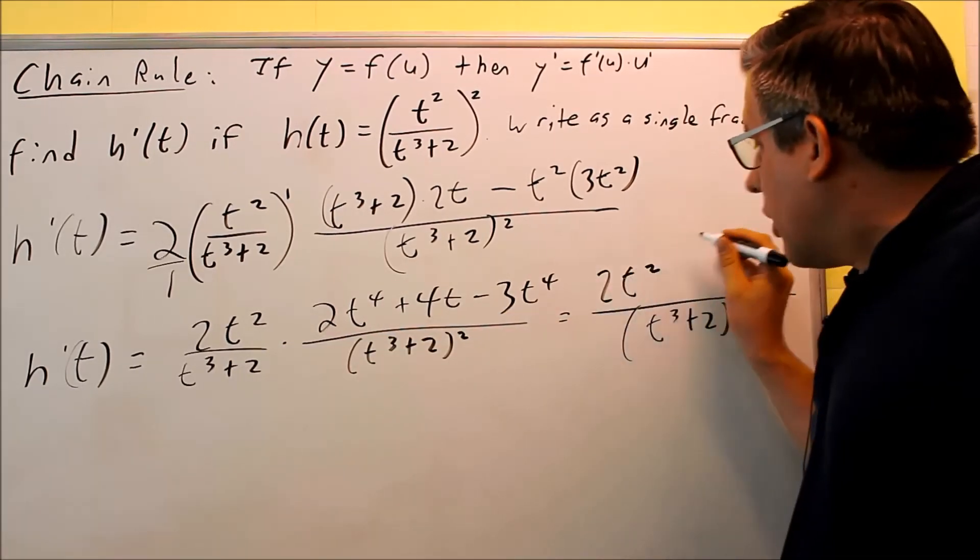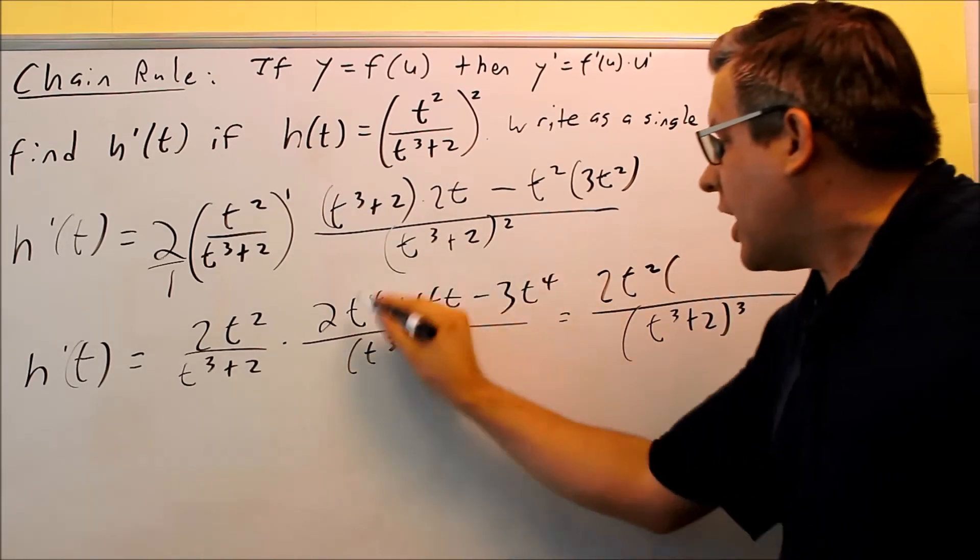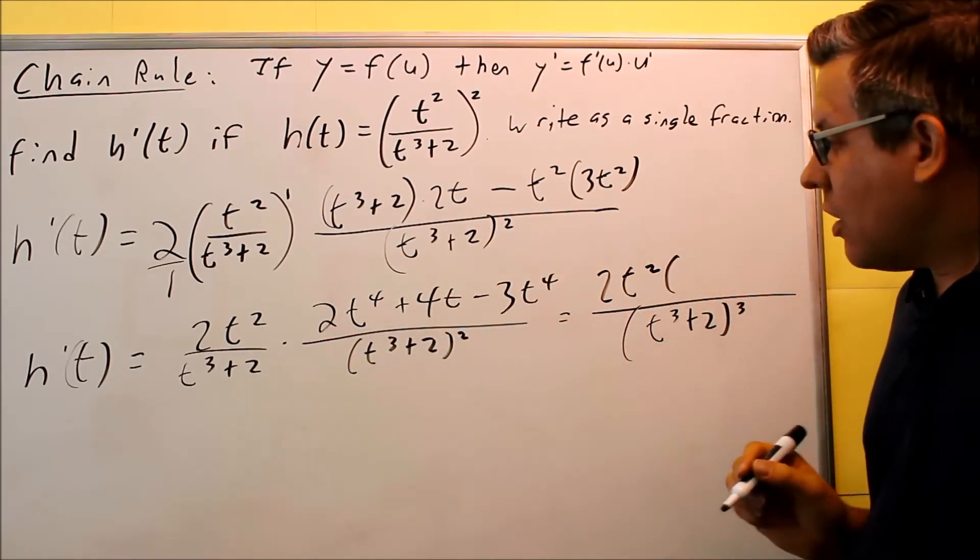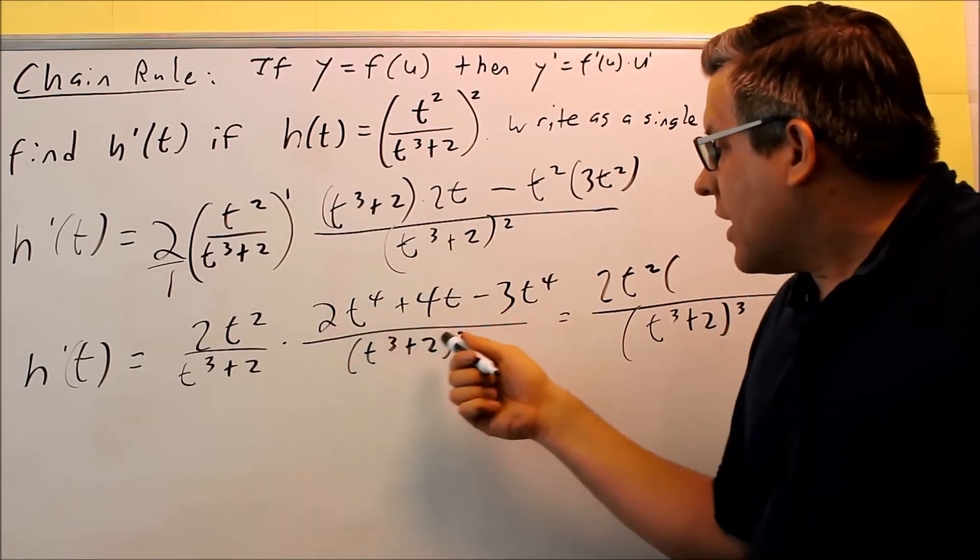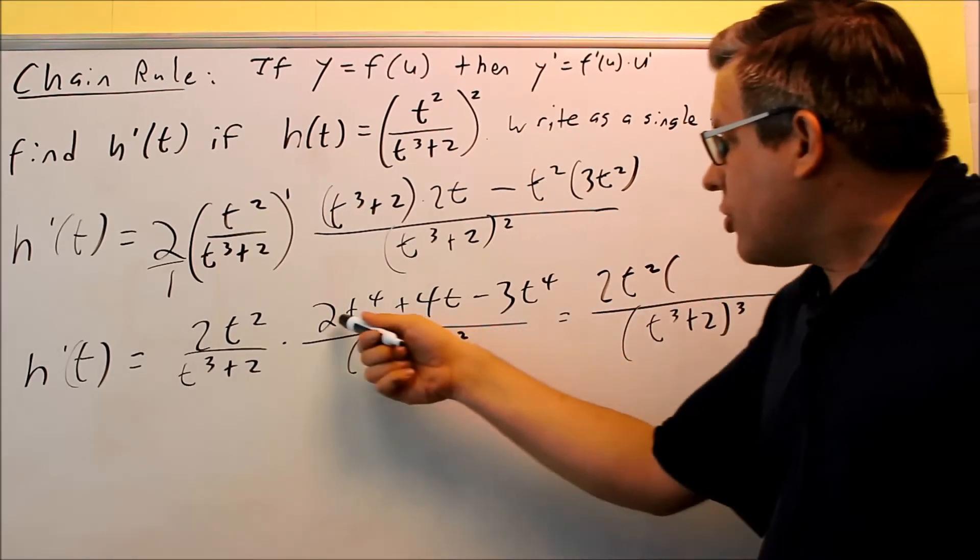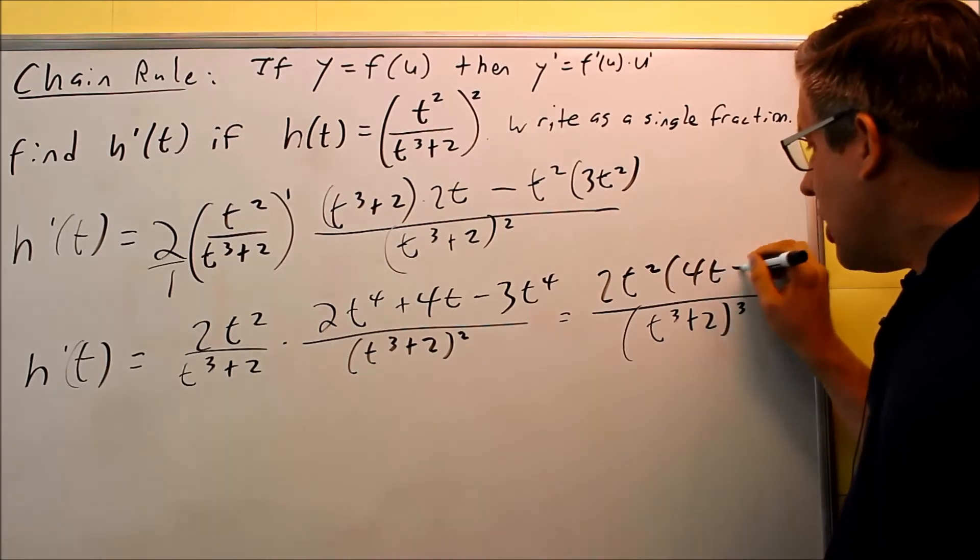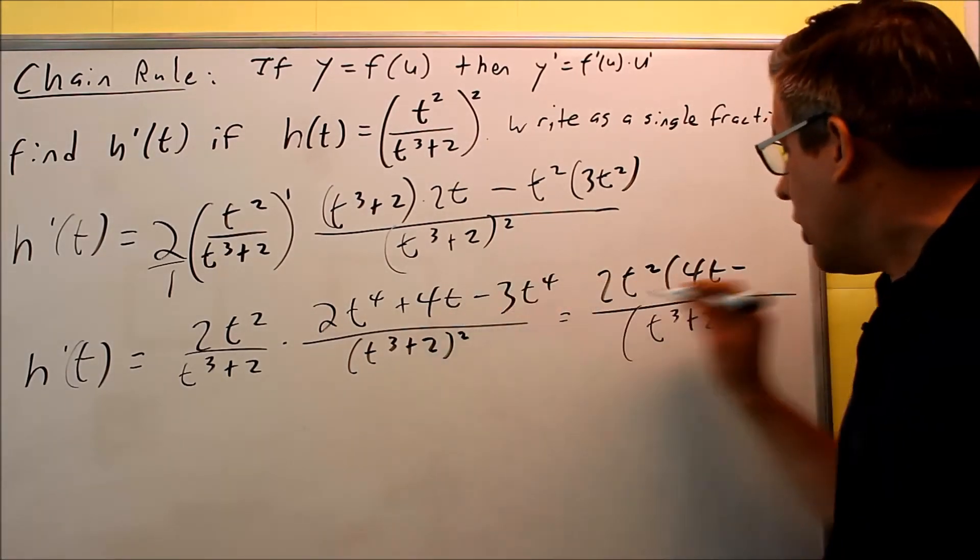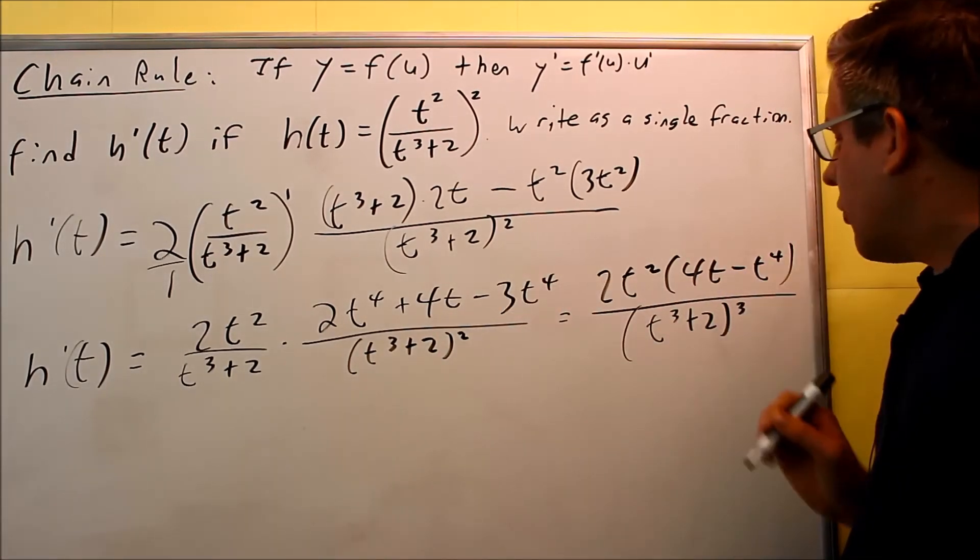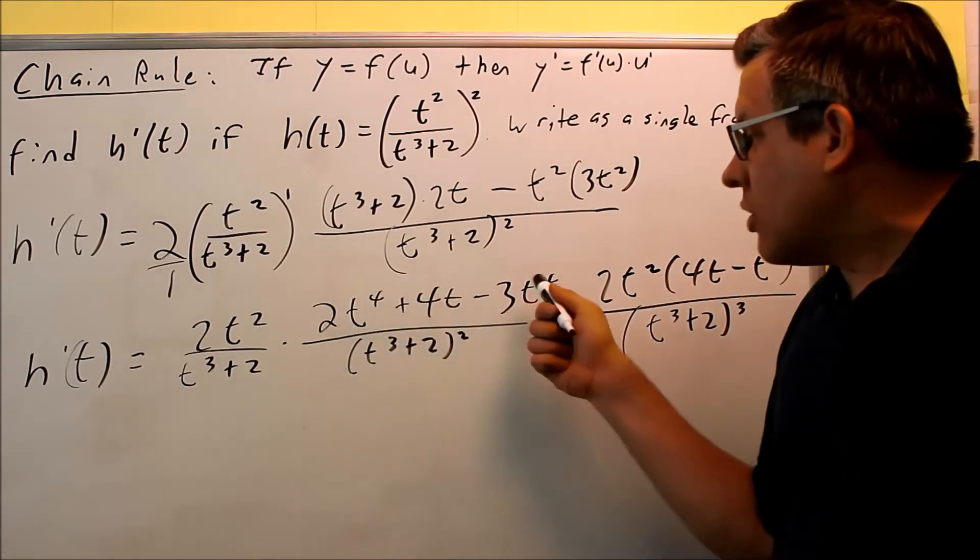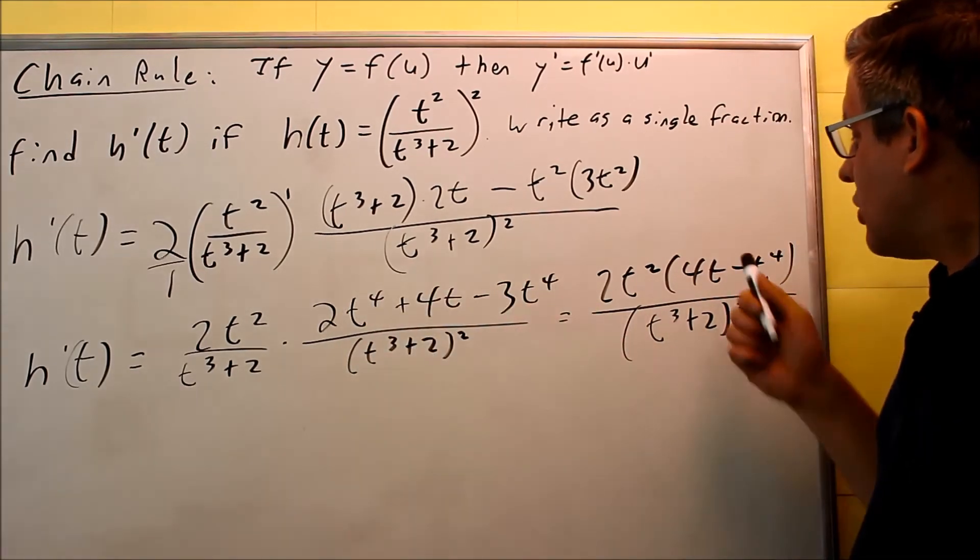I have 2t squared, and then I'm just going to simplify this other part. So when I do that, I get 2t to the 4th minus 3. That's a negative. So I can write this as 4t minus a 1t to the 4th right there. So again, I just subtracted these terms to get this.